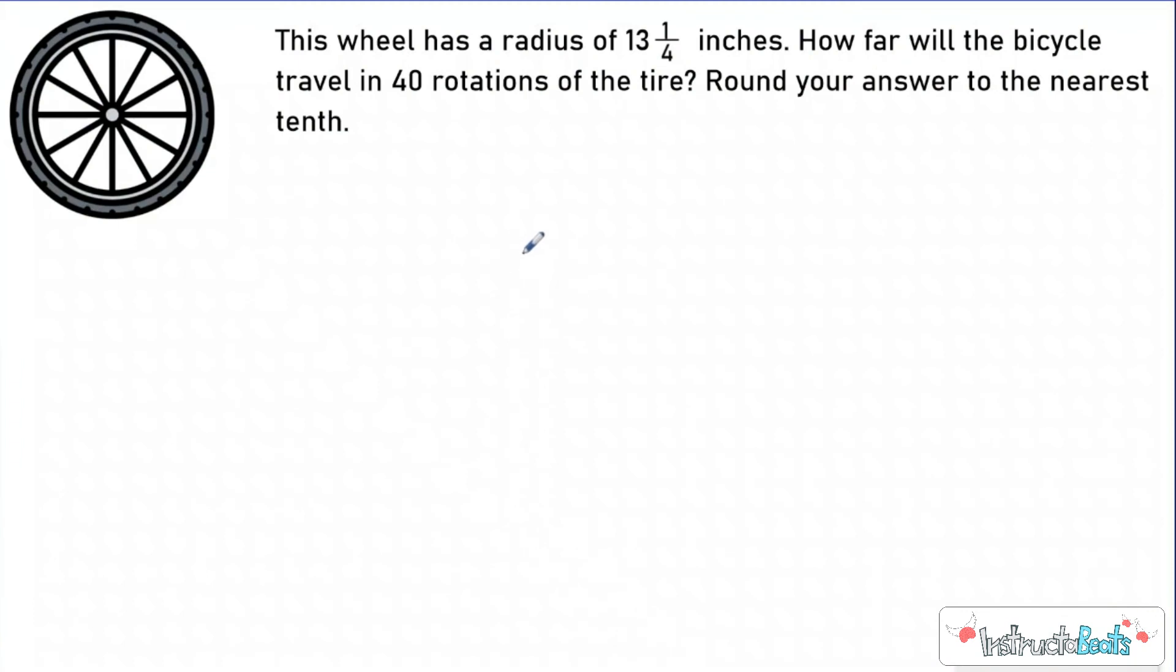So our first thing that we do in real world problems is we take the circumference or area and then have to do an extra step with it. We have to read carefully. Let's take a look at another type of problem. So here we have a question about a wheel. So with wheels, we know that they're circles.